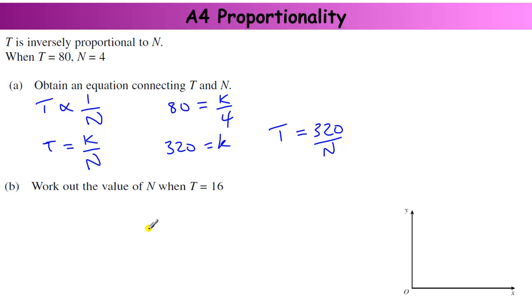Work out the value of n when t is 16. So 16 equals 320 over n. OK, so there's a little tip here when you've got a number equal to a fraction and you want the bit on the bottom. The long way around this is to multiply by the n and then divide by the 16. But we can just, there's a little tip for switching these two rounds. So we've just got n equals 320 over 16. Which leaves me with 32 divided by 16 is 2 with a 0 on the end. So n equals 20.